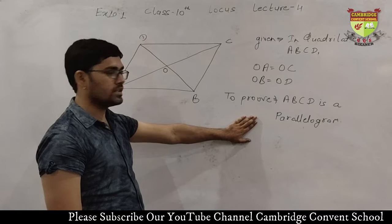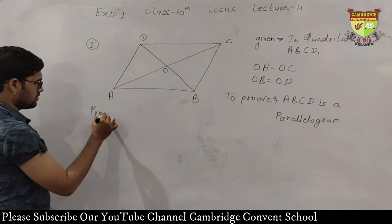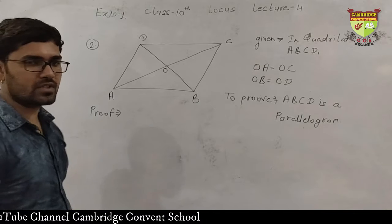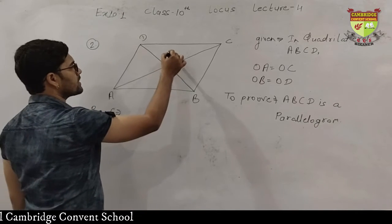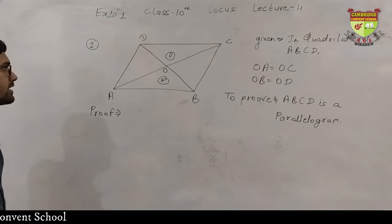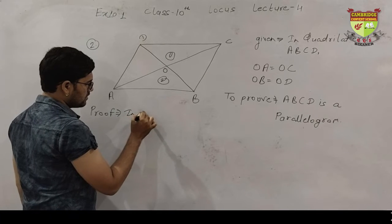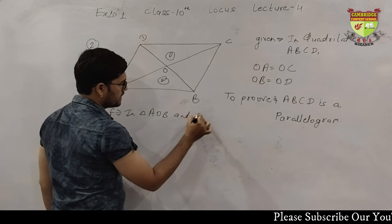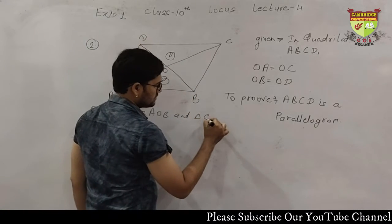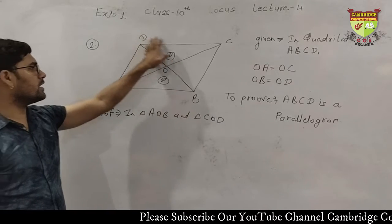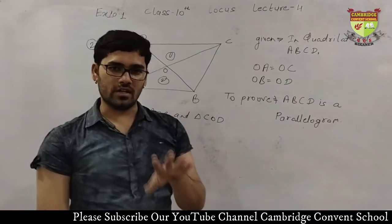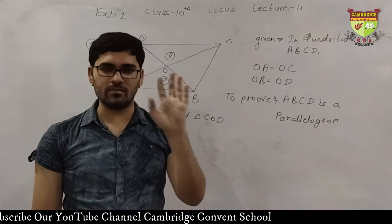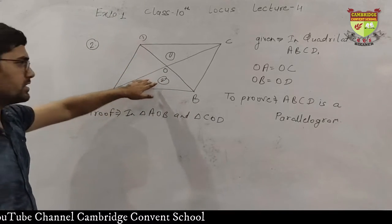The step we will use is congruency of triangles. I am considering triangle AOB and triangle COD. In both these triangles, if I can show three things equal, then the remaining things will be equal and both triangles will be congruent. So, in triangle AOB and triangle COD: OA equals OC from the given — one thing is equal.